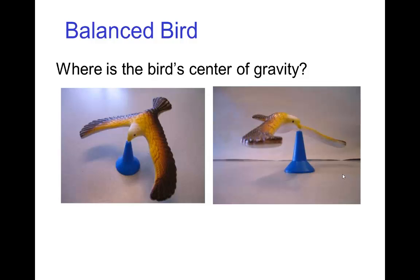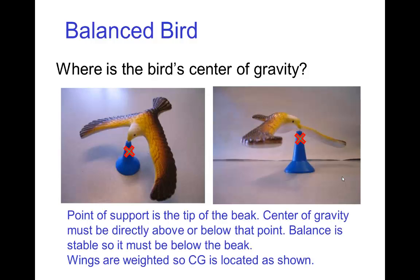We see an example of that here. This little toy, the bird is balanced with its beak on the pivot point which is that stand. From this we realize the center of gravity, because this happens to be a stable balance, the center of gravity has to be directly below the pivot point. So it must be located where that red X is marking.